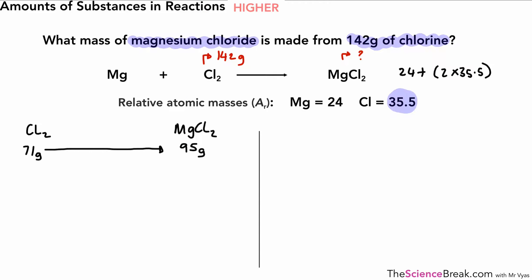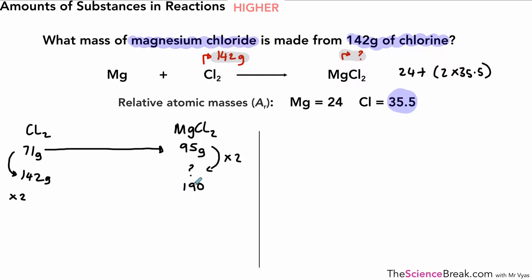But we don't have 71 grams — we have 142 grams. What have we done to 71 to get to 142? We doubled it, so times 2, and therefore we also double the 95, giving us an answer of 190 grams. So we get 190 grams of magnesium chloride from 142 grams of chlorine in this balanced chemical equation.